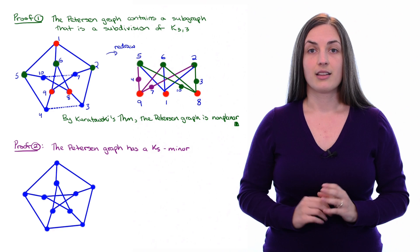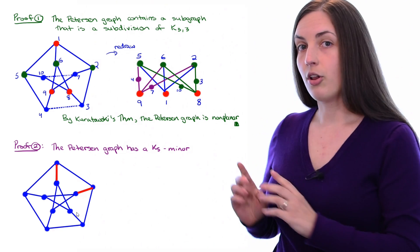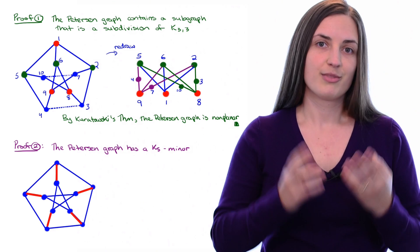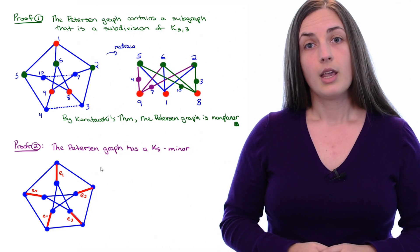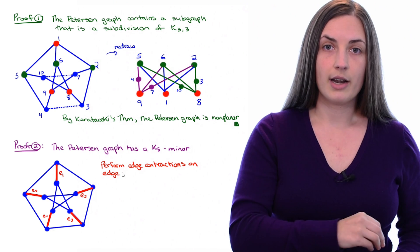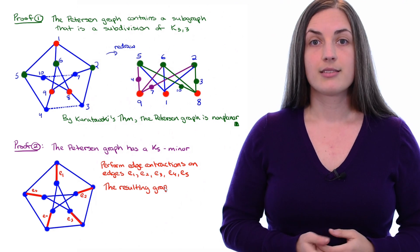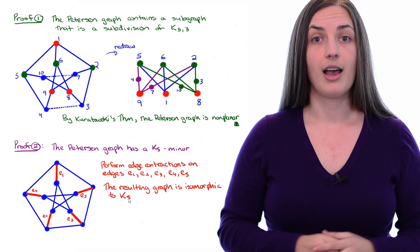Well, this is where we use the fact that the Peterson graph looks like K₅. I'm going to highlight all of these red edges, which are sort of spoke edges, if you will. If I imagine what happens if I contract each one of those red edges in turn, what will I get? I'll end up with something isomorphic to K₅.